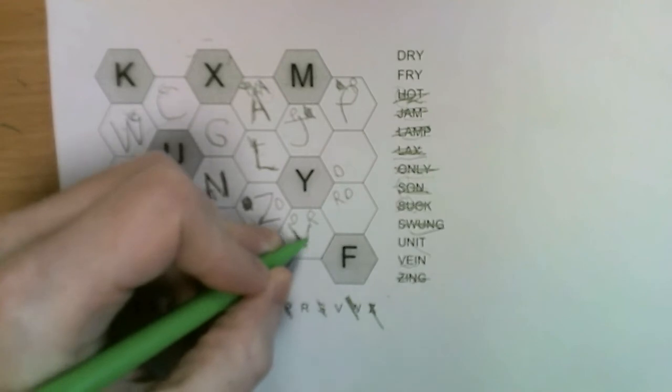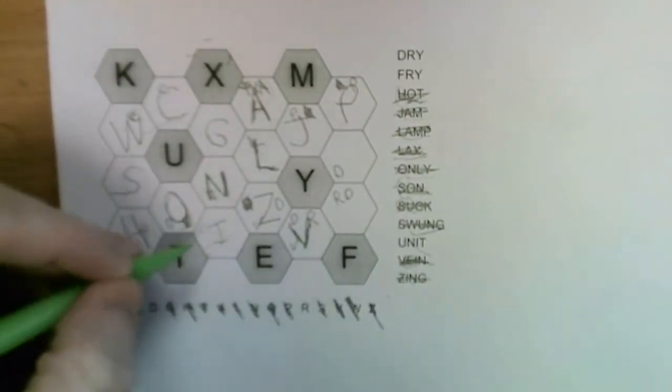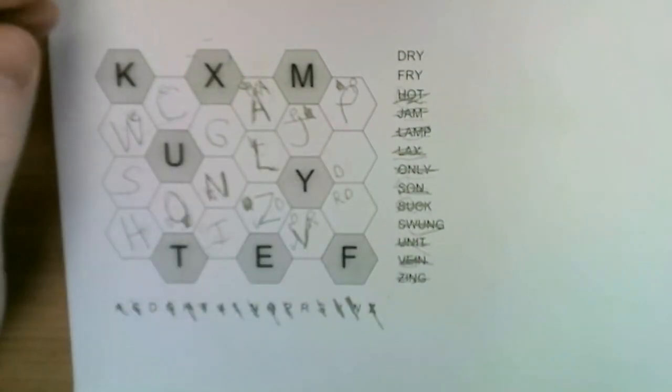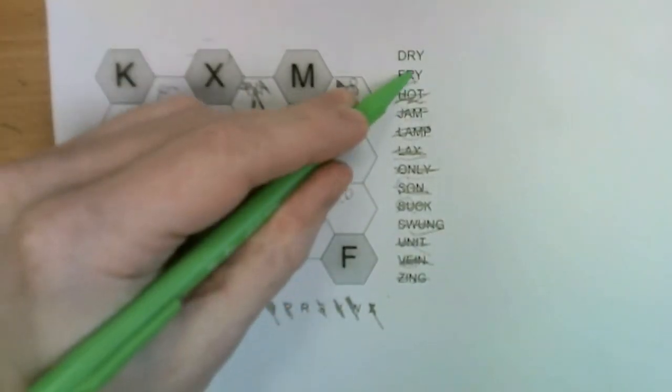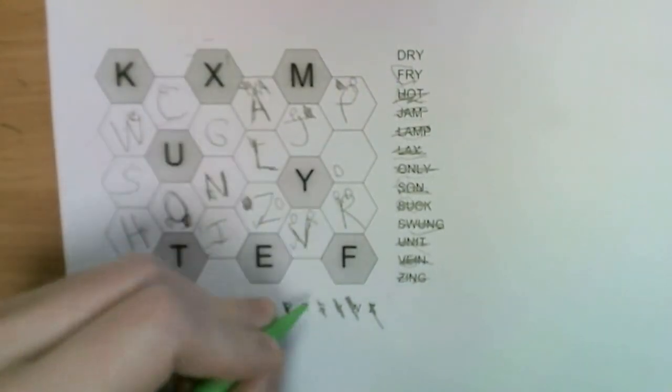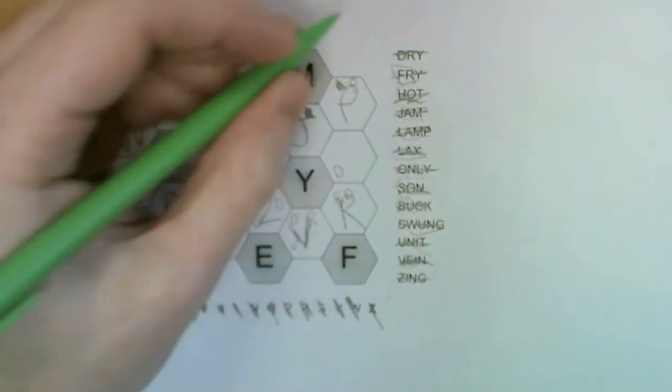We've got vein, so the only available neighbor of the E is here. So that's our vein. The unit is already placed. That just leaves us dry and fry. F has to make the R, only one option. That gives us fry, which leaves a D here.